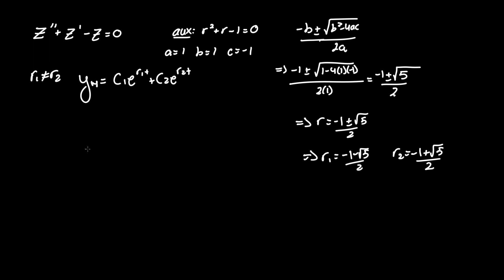So we have r one and r two. It just looks misleadingly large but there's no issue going on here, it's just going to be some random decimal. So our answer y homogeneous equals c one e to the negative one minus radical five over two times t plus c two e to the negative one plus radical five over two t.